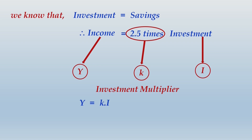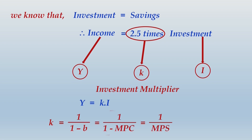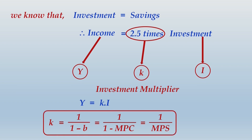The 2.5 was obtained by taking the inverse of 0.4, which was the Marginal Propensity to Save. So we conclude: K = 1 / (1 − b) = 1 / (1 − MPC) = 1 / MPS. The investment multiplier is the inverse of the Marginal Propensity to Save.